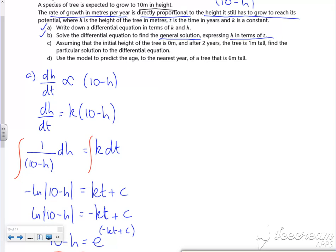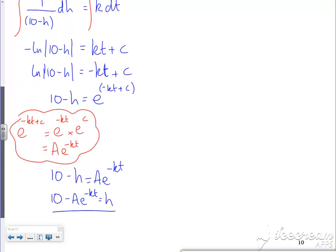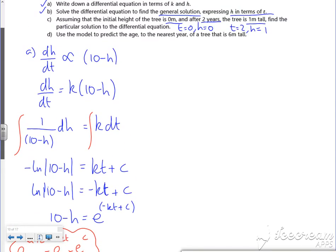Then it says assume the initial height is zero. So when t=0, h=0. After two years it's one metre tall, so t=2, h=1. That will allow me to find the missing constants.